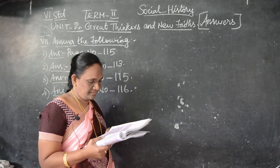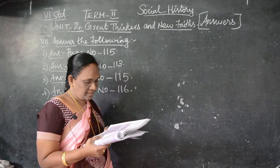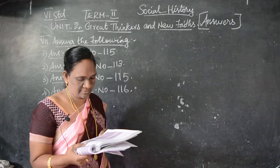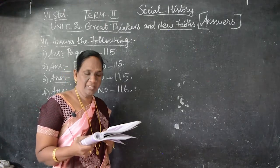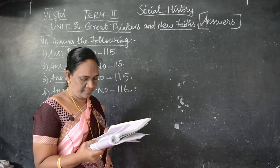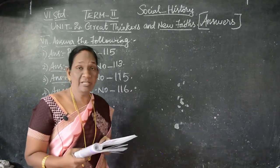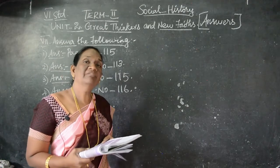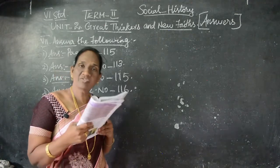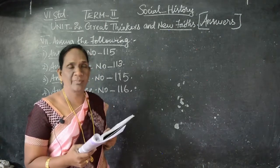Fifth point: Hinayana, also known as Theravada, spread to Sri Lanka, Myanmar (Burma), and Southeast Asian countries. Mahayana spread to Central Asia, Tibet, China, and Japan, where the middle path was accepted. So there are five points in total. In the question paper, for a detail answer write all five; for a short answer, write any three.